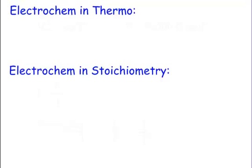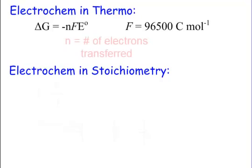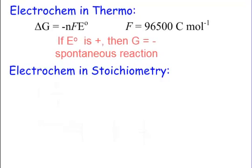There are some equations to take a look at electrochem in thermo and electrochem in stoichiometry. Our electrochem in thermo equation is delta G, this is where we find out that it's spontaneous, equals negative nFE. The n is the number of electrons that we're transferring. F is a constant, it never changes. It's called Faraday's constant. It's 96,500 coulombs for every one mole. And we have our E, our E is, of course, our standard cell potential, what we got in voltage.